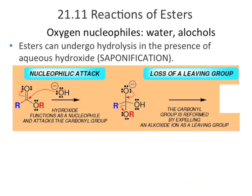We can also run a saponification reaction. When going from acid to ester, base conditions were a bad idea; but going from ester to acid, base conditions are actually fine. Our base needs to be a good nucleophile, and since we're starting with the ester, there's no hydrogen on the leaving group to worry about. Saponification is what we did in lab when we made soap.